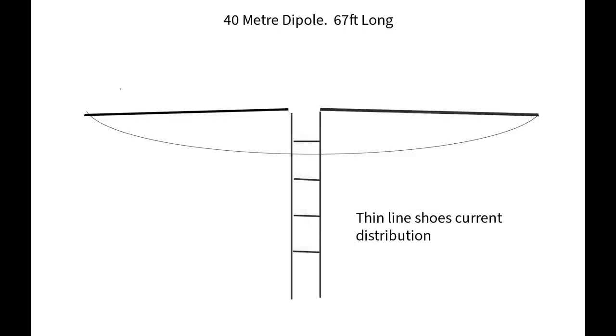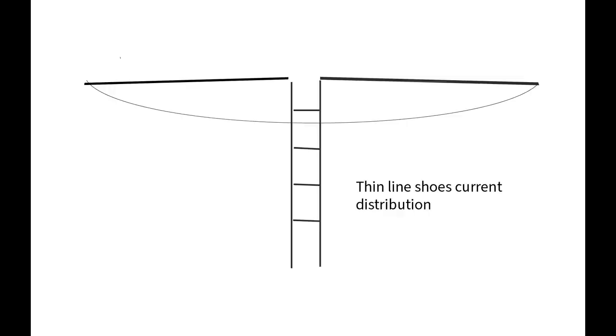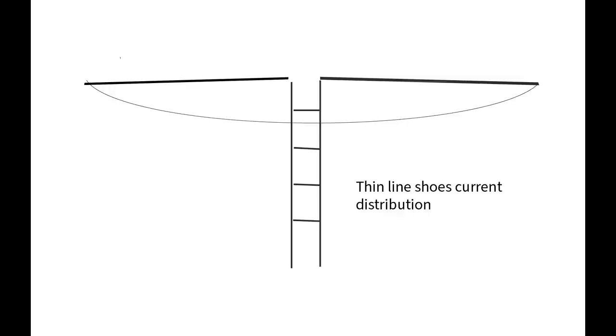Now we've replaced it with ladder line, but in actual fact not much has changed. The dipole is the same length, so therefore the current distribution is exactly the same. The only thing that's changed is the method of feeding it. The polar pattern, the radiation pattern, is exactly the same. Both antennas radiate at 90 degrees from the run of the antenna. So we've proved the point: there is no difference between a dipole and a doublet.